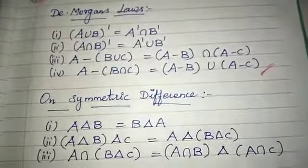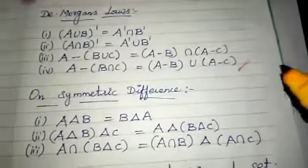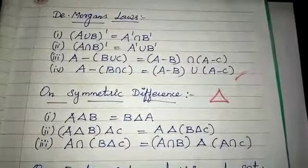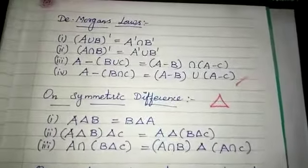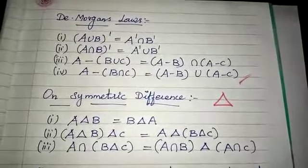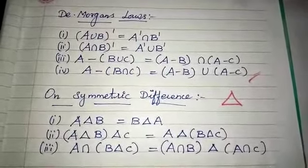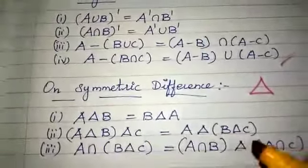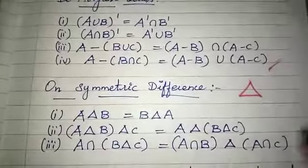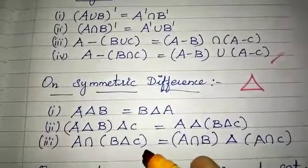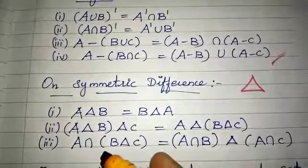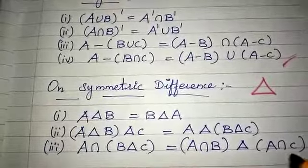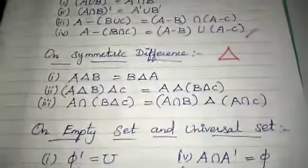Symmetric difference properties: Commutative — A delta B equals B delta A. Associative — (A delta B) delta C equals A delta (B delta C). Distributive — A intersection (B delta C) equals (A intersection B) delta (A intersection C).